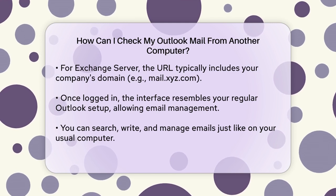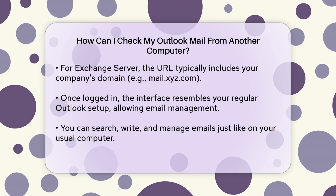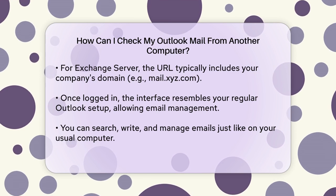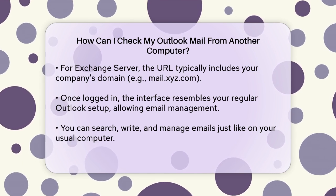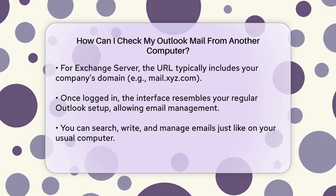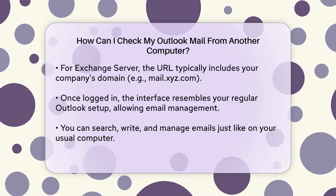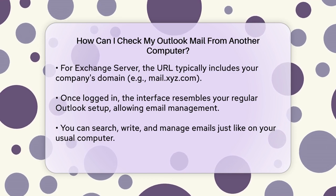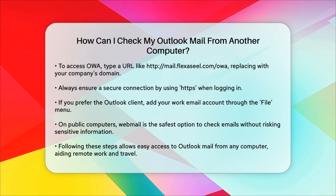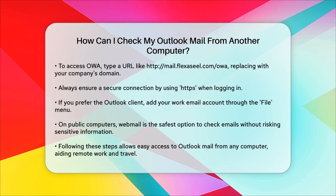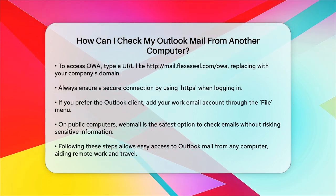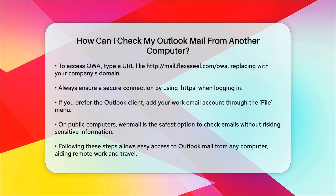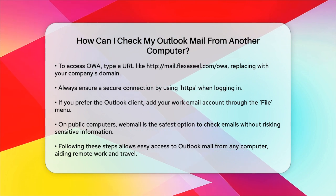When you log in, you'll need to enter your domain and username, followed by your password. This will give you full access to your Outlook emails and features from any computer with an internet connection. If you prefer to use the Outlook client on another computer, you can set it up by adding your work email account. Go to the File menu, select Info, and then click Add Account. Enter your work email address and password and follow the prompts to complete the setup. Using webmail or the Outlook client ensures that you can stay connected and manage your work emails efficiently from any location.